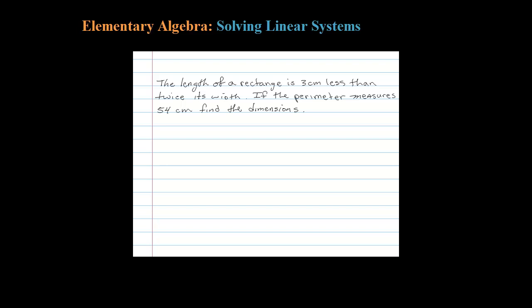The length of a rectangle is three centimeters less than twice its width. If the perimeter measures 54 centimeters, find the dimensions. Let's identify our variables here with a picture. We're in the section where we're allowed to use two variables, so let's use L and W. We know perimeter equals 2L plus 2W — that's L plus L plus W plus W.